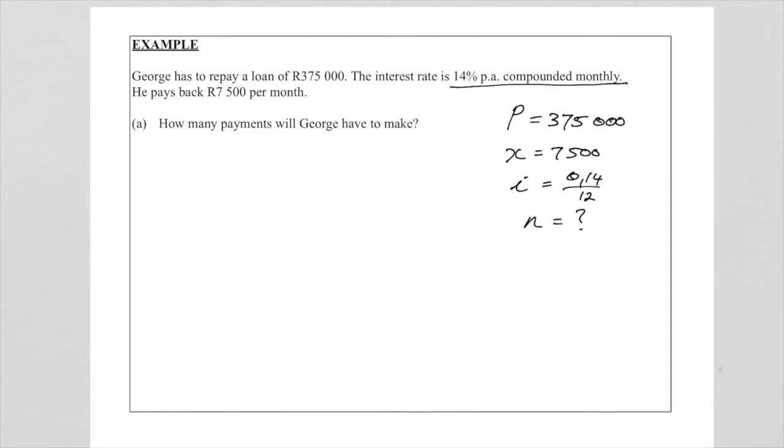So of course, because it's a loan and we know the loan amount, we know the payment, we know the interest rate, and we need to solve for n, we're going to use the present value annuity formula. Now P is equal to x times 1 minus 1 plus i to the minus n, please remember that minus n for present value, over i. And now let's substitute. So now we say P which is 375,000 is equal to my x is 7500 times 1 minus 1 plus my interest rate 0.14 over 12 and the exponent is then minus n. Remember n is what we are looking for, over i, 0.14 over 12.